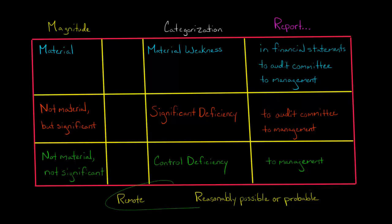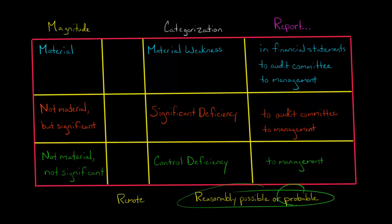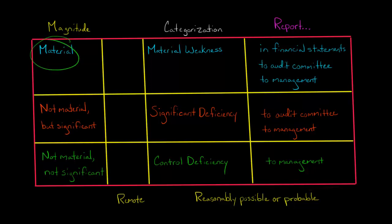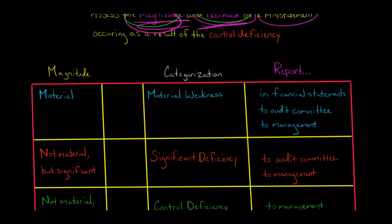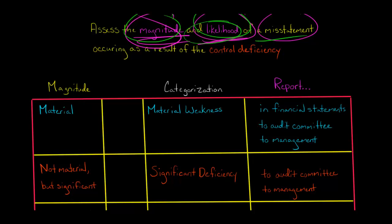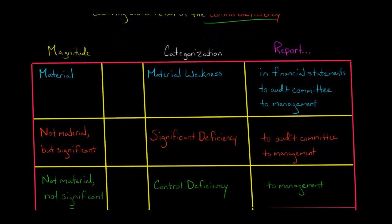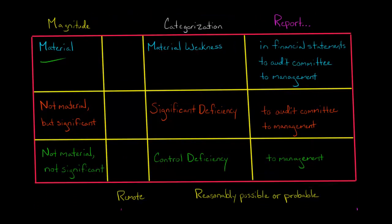On the likelihood axis, we have remote and reasonably possible or probable — think of those as meaning the same thing. If the likelihood of a misstatement is remote, then it doesn't matter whether the magnitude is material, not material but significant, or not material and not significant. In each scenario, you do not have to do anything as the auditor if the likelihood is remote.